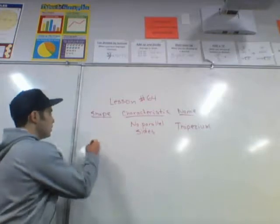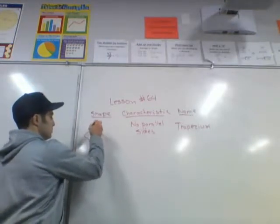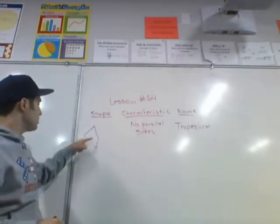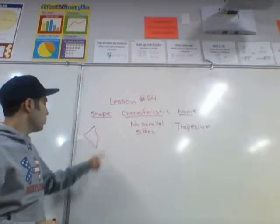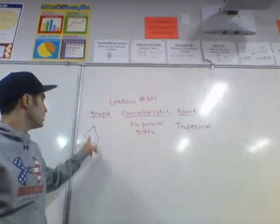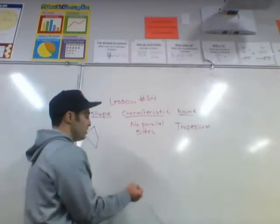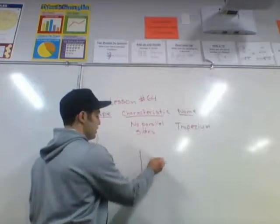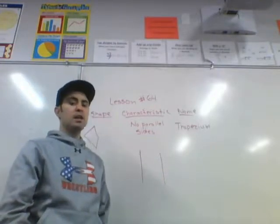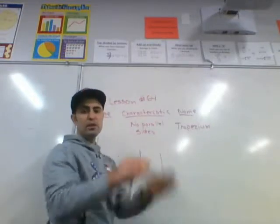The trapezium would look something like that — a shape with one, two, three, four sides, making it a quadrilateral. But specific to this shape, there are no parallel sides. Just to remind you, parallel means two lines that are next to each other that, if they were to continue on out forever, they would never intersect.